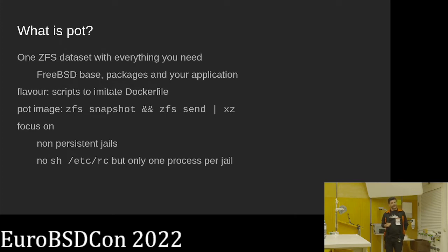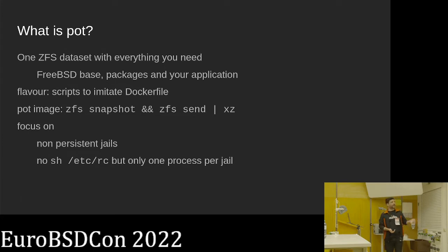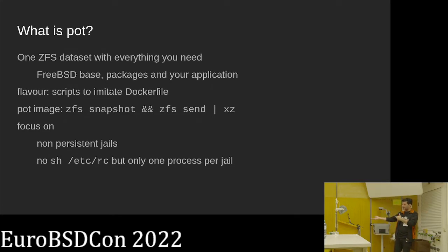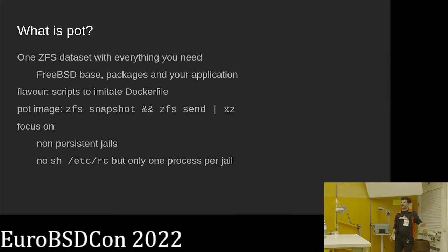To create an image in an automated way, support for scripts was added. Back in the day, other frameworks managing jails didn't support images. The naive easiest way to create an image: you have one ZFS dataset, take a snapshot, compress it into an archive. To restore it, you just extract it, clone it, and you have the image — a naive but working solution.